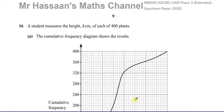Welcome back, this is Mr. Hassan's Maths Channel. I'm on question 16 from the specimen paper of the Cambridge IGCSE 2025 syllabus paper 2 non-calculator paper. We have question 16 part A, which is about cumulative frequency. A student measures the height in centimeters, h centimeters, of each of 400 plants. The cumulative frequency diagram shows the result.